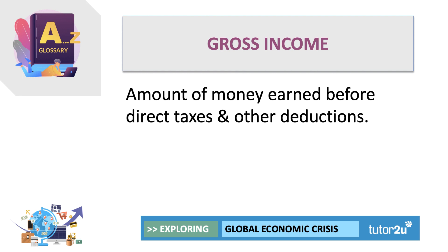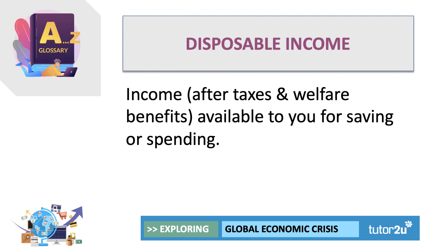The income that flows into a household - gross income - is the amount earned before any deductions, before direct taxes are taken off. Disposable income is a key concept for economists: it is your gross income after direct taxes such as income tax have been deducted, and also adjusted for any welfare benefits coming into the household, such as income support if you're out of work. So disposable income is income available to you to choose to spend or save, after tax and benefits.